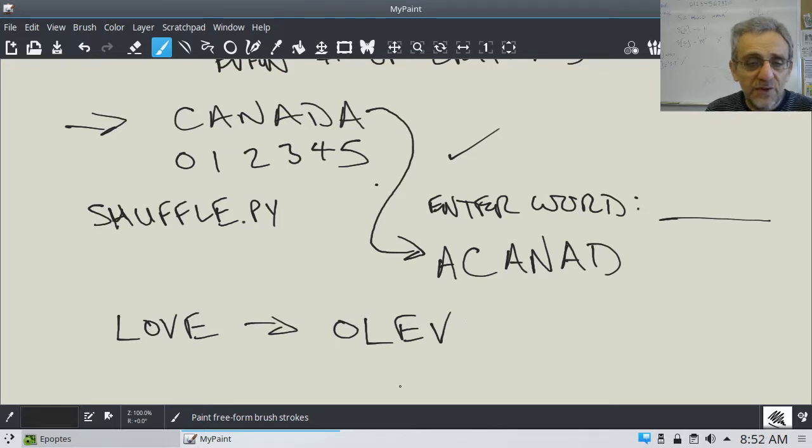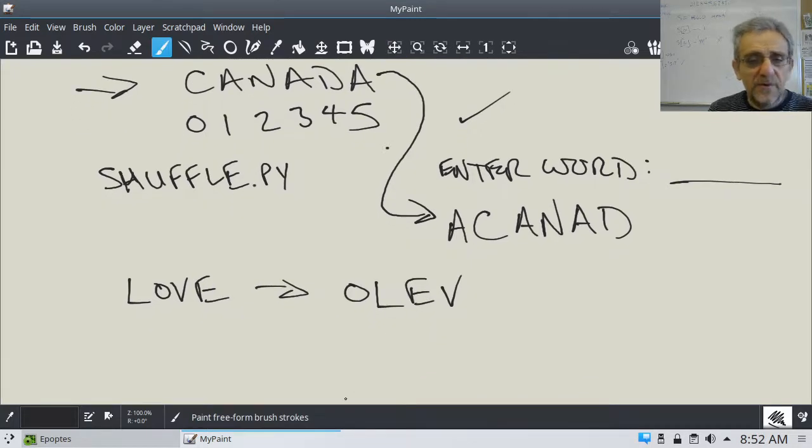If we do one more word, maybe you'll see the pattern. How about, let's do the word stop. That's also four letters, so that's okay. So it would be T, S, P, O.